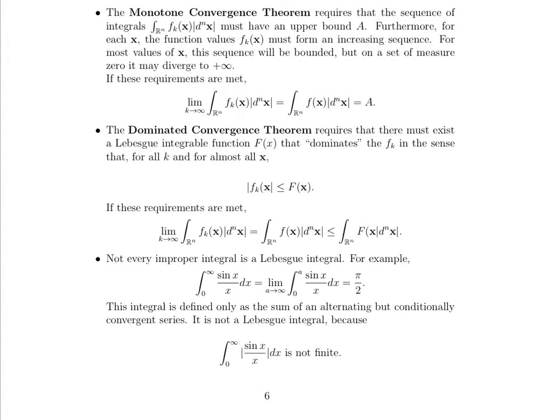Now if these requirements are met, then we can say that the limit as k goes to infinity of the value of the integral of f sub k of x is going to be equal to the integral of that limit function f. And that value, the value of that integral, is A. Repeating that again under these conditions, if you take a look at the limit as k goes to infinity of the integral values for f sub k of x, then that's going to be equal to the integral of the limit function, which is going to be equal to A. That's the upper bound when we were looking at the sequence of the integral values for the f sub k's.